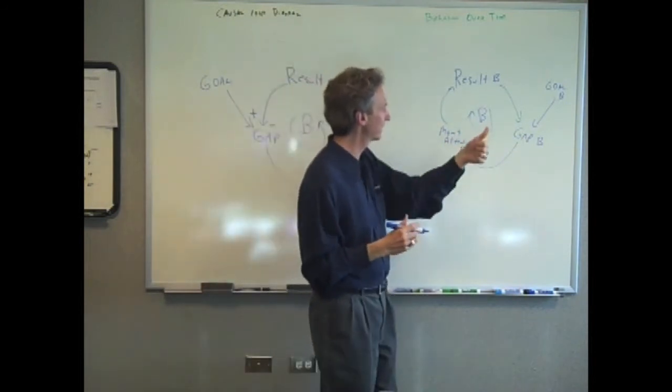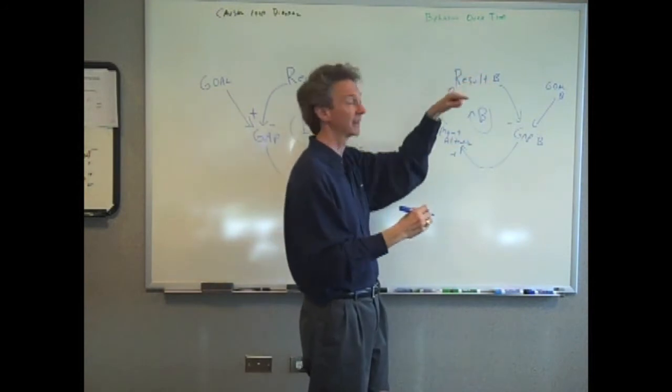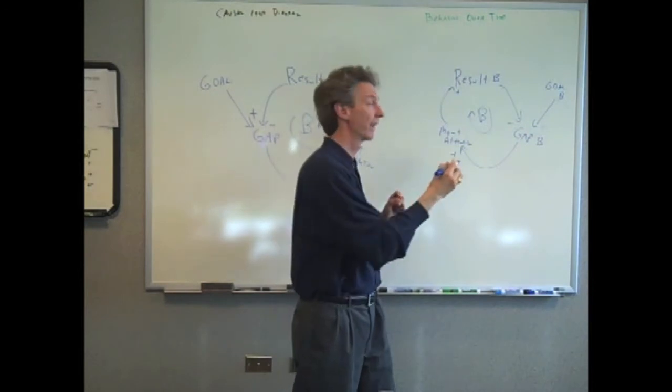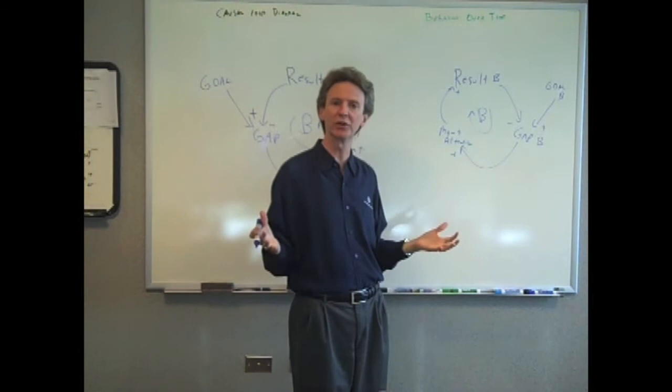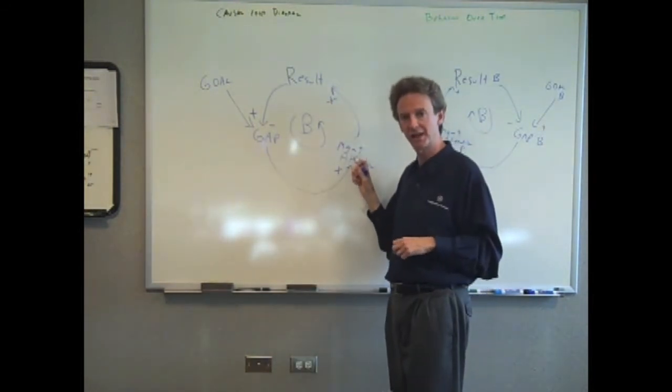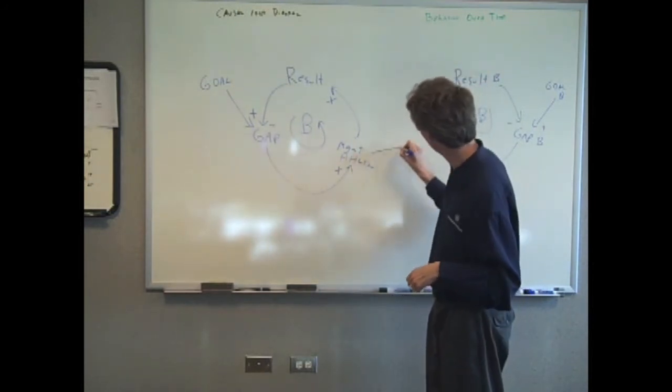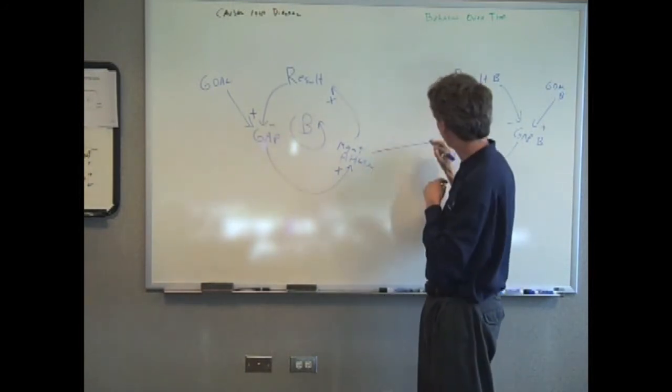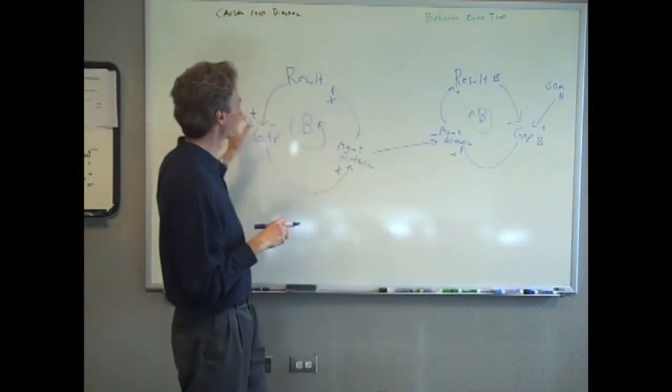And the way that these two are, and we can do the signs again. Increase in the result is a decrease in the gap. Increase of the gap is increase in attention. Increase in attention is increase in results. The higher the goal, the higher the gap. Yep. Okay. And then the way these two loops are connected is that the more time and attention and resources and money you spend here, the less you spend here and vice versa. So there is a link here. An increase in management attention here will be a decrease here.